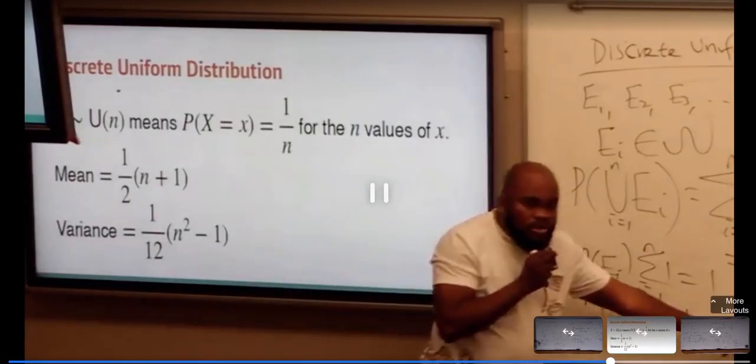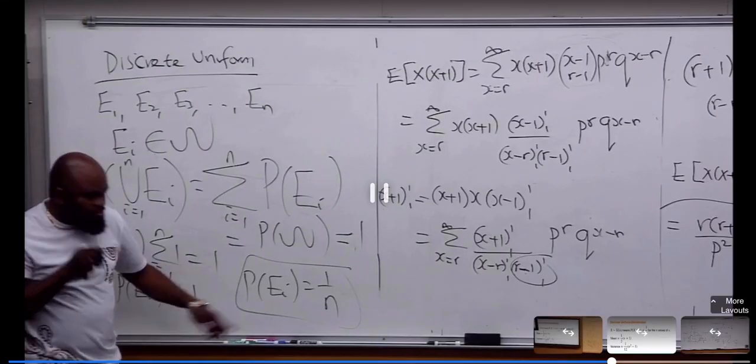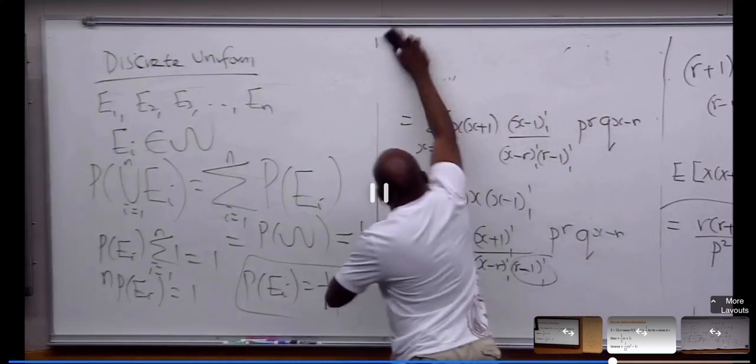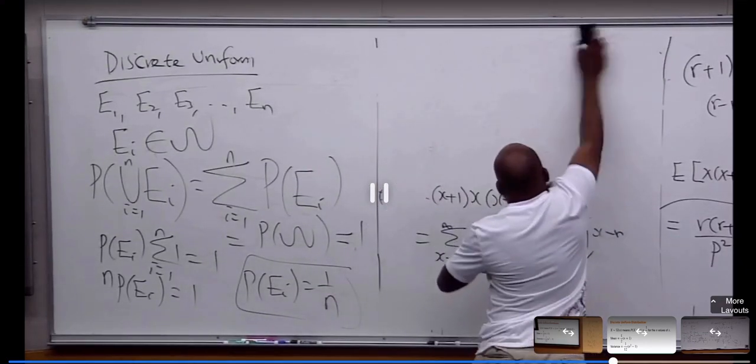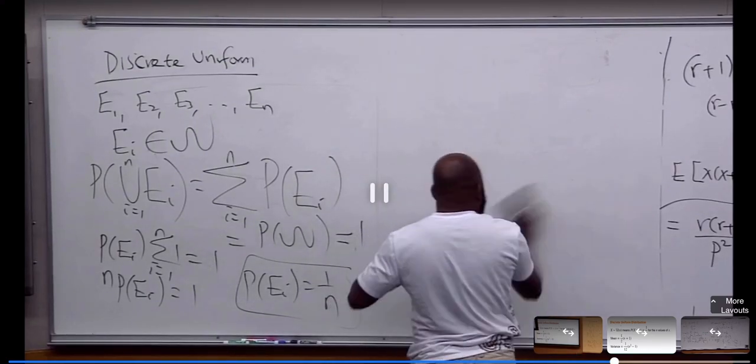This is how we derive this from what we've done before. So this is what we call discrete uniform distribution. Now, I quickly want to go because of my time to the derivation of the mean, the knowledge of algebra.